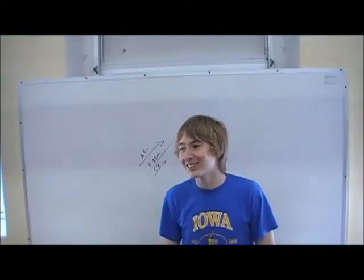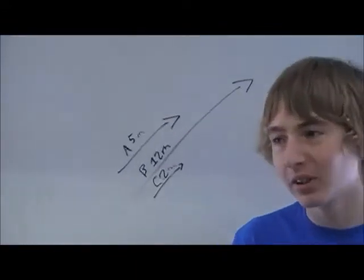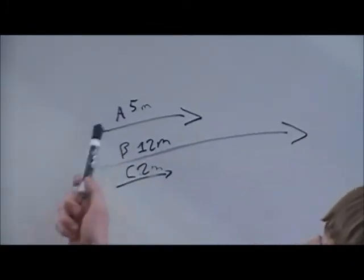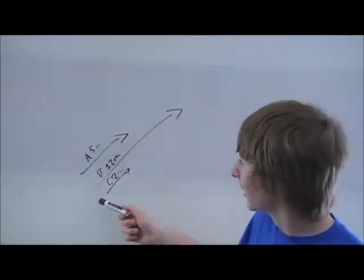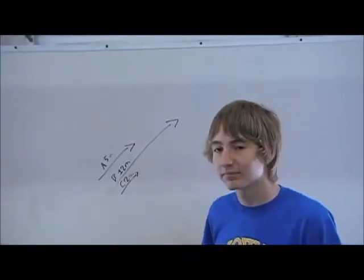Parallel vectors are vectors that go in the same direction but are not necessarily the same magnitude. So vector A is 5 meters, vector B is 12 meters, and vector C is 2 meters. But they are all parallel vectors.